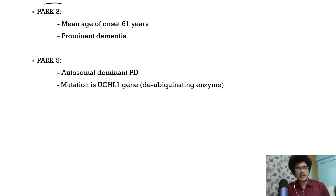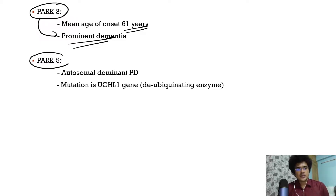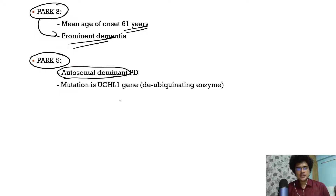PARK3 is associated with prominent dementia and is usually late onset, around 61 years of age. PARK5 is autosomal dominant — remember most are autosomal recessive, but PARK5 is autosomal dominant. It is caused by a mutation in the deubiquitinating enzyme UCHL1 gene — remember this for the exam.